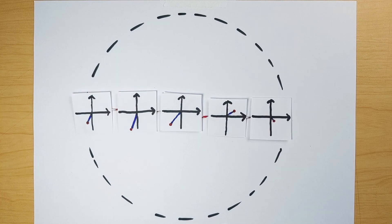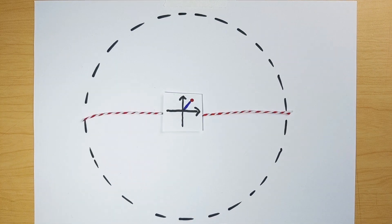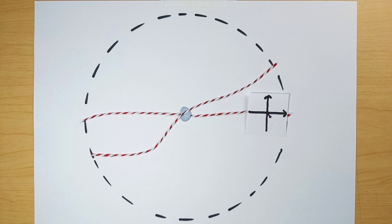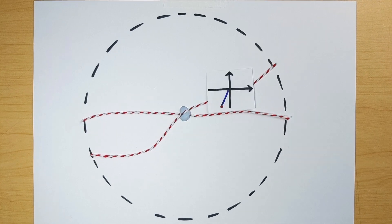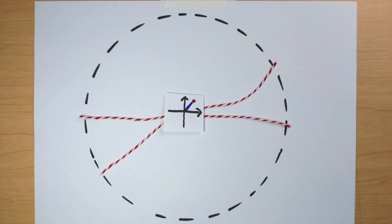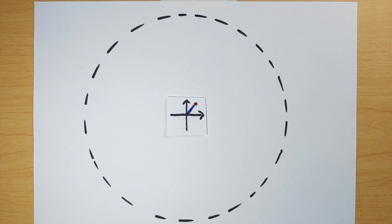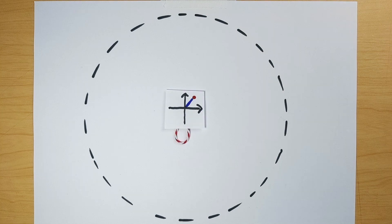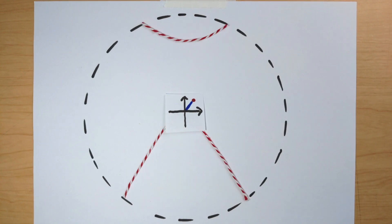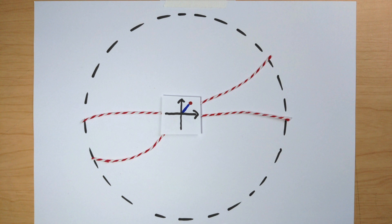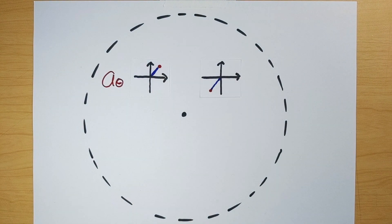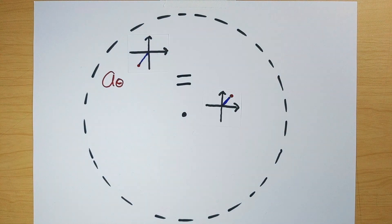Now, in three dimensions, if I follow this exchange path twice, the result is a path that can be deformed down into a tiny loop and eventually to a point — that is, a path along which the particles are not exchanged. There's no rotation that occurs along this trivial path, and so there can't be any rotation that occurs along this double exchange path either.